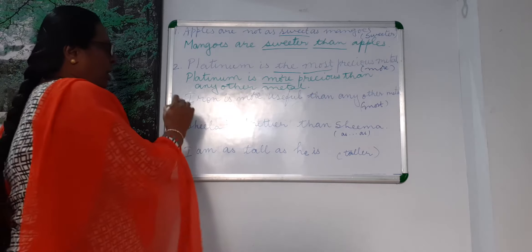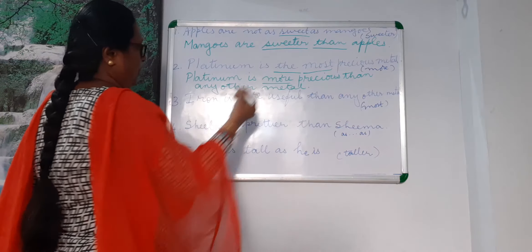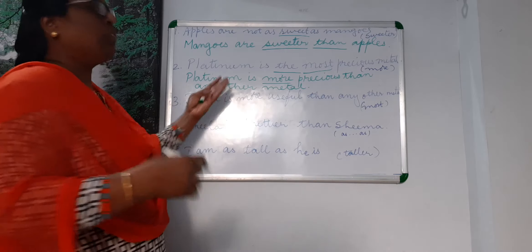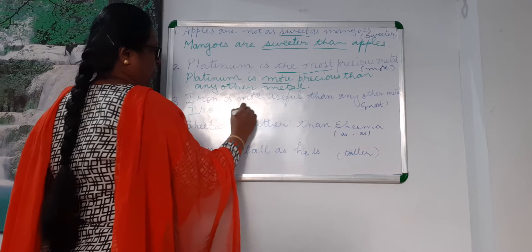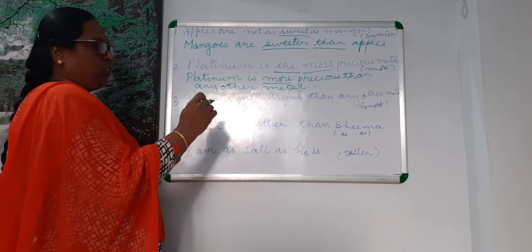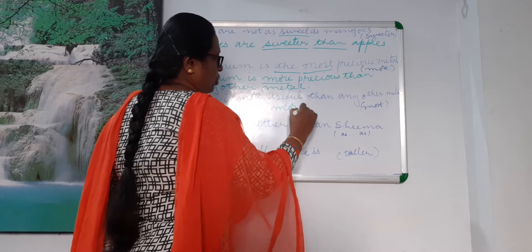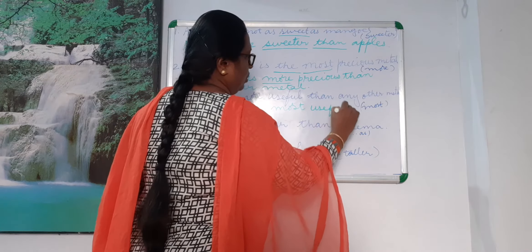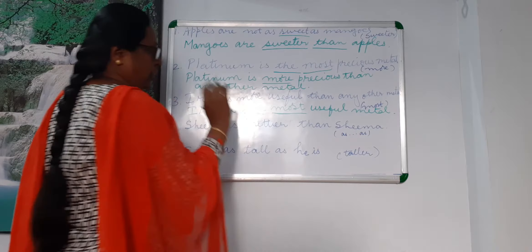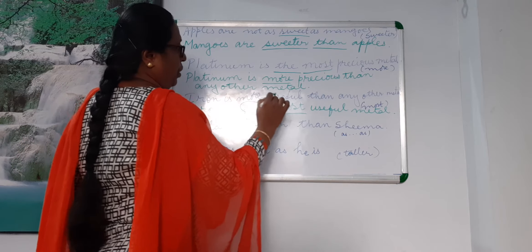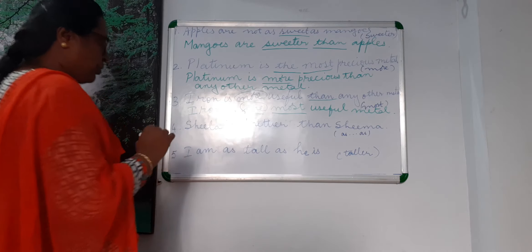Iron is more useful than any other metal. Here you are asked to write in superlative using 'most.' The answer is: Iron is the most useful metal. When you are using 'most,' 'the' should also come along with it. When using 'most,' there is no 'than' — instead, there has to be 'the.'